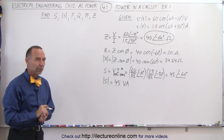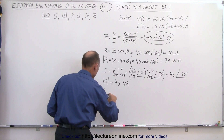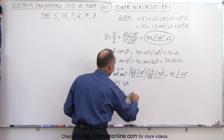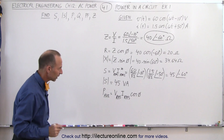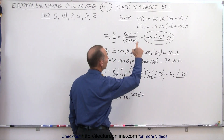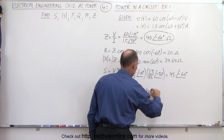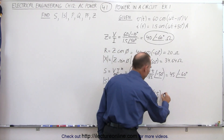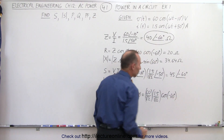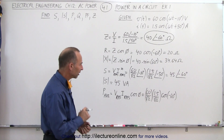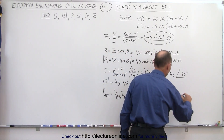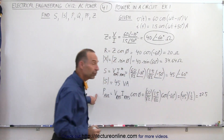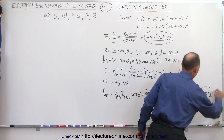What about P, the average power? P average is equal to V RMS times I RMS times the cosine of the phase angle. So in this case, V RMS is 60 divided by the square root of 2, multiplied by I RMS, which is 1.5 divided by the square root of 2, multiplied by the cosine of minus 60 degrees — the same as cosine of 60 degrees, which is 0.5. That gives us 90 divided by 2, which is 45, times one-half, which equals 22.5 watts. That's the real power.